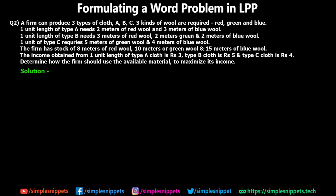Let me quickly read out this question. A firm produces three types of cloth: A, B and C. Three kinds of wools are required as raw materials: red, green and blue. So the final products of the firm are A, B and C, and we have three different raw materials being used.